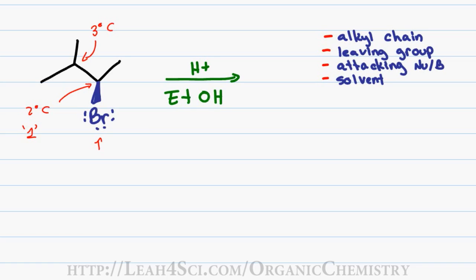Bromine as a leaving group will form a large BR minus in solution which is stable and therefore we can say that this is a good leaving group and will not slow down our reaction.